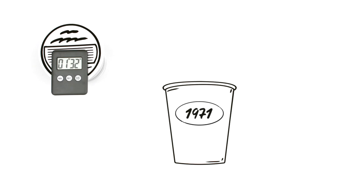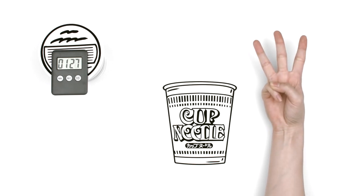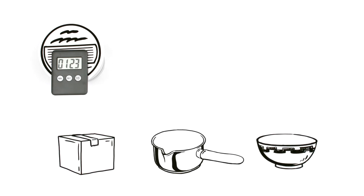1971 saw the launch of the world's first cup ramen product, Cup Noodles. The cup has three functions. It's packaging, cookware, and tableware. This was a truly revolutionary idea.